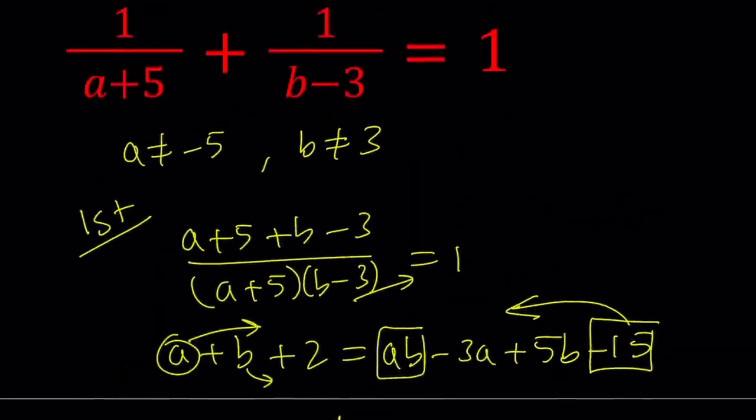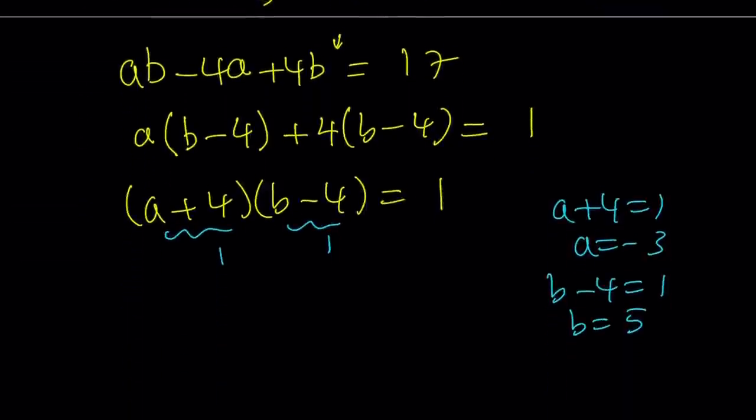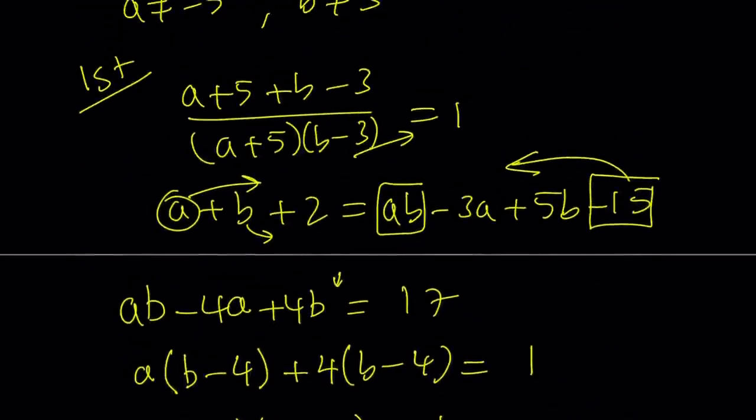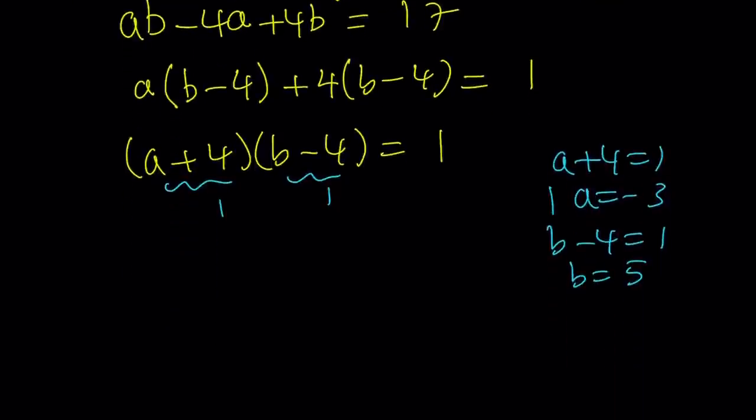Now initially, remember, we said that a cannot be negative 5 and b cannot be 3. We're not violating that rule, are we? We're not. So we're good, and these solutions are valid. So we're going to use them.